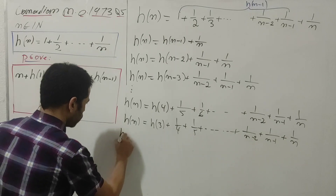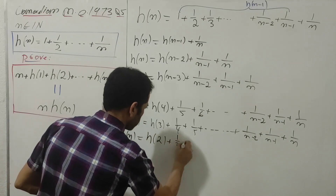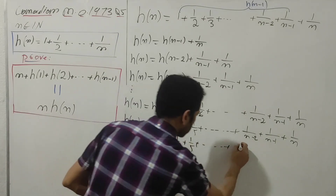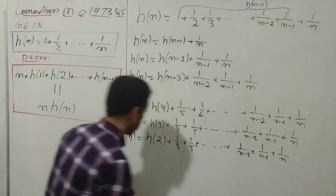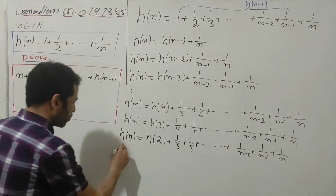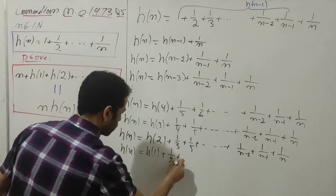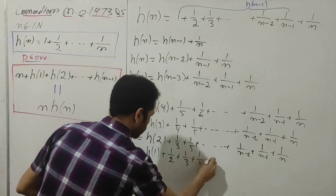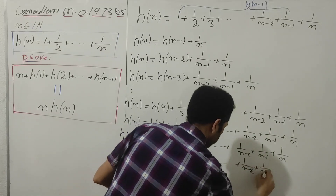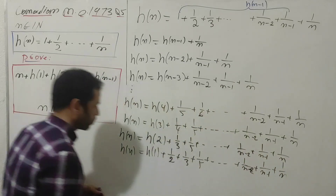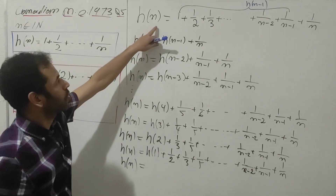H(n) equals H(2) plus 1/3 plus 1/4 plus 1/5 and all the way down to 1/(n-2) plus 1/(n-1) plus 1/n. For the last expression, H(n) equals H(1) plus 1/2 plus 1/3 and all the way down to 1/(n-2) plus 1/(n-1) plus 1/n, where H(1) equals 1.